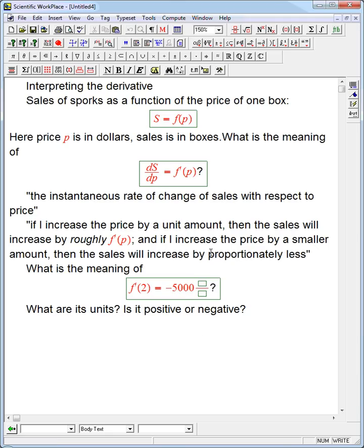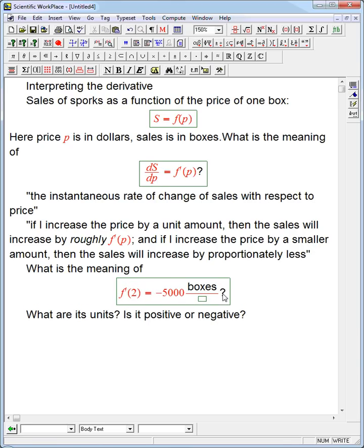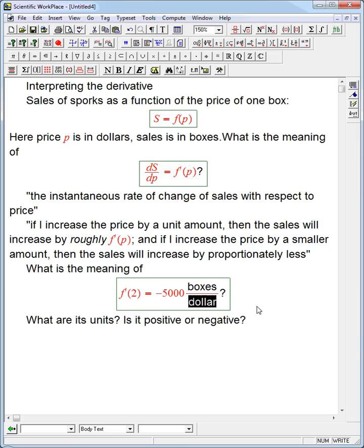Well, the units should be the units of the output, which is sales, which is boxes, over the units of the input. That's always, always, always the answer to what are its units, and this is dollars. Boxes per dollar.